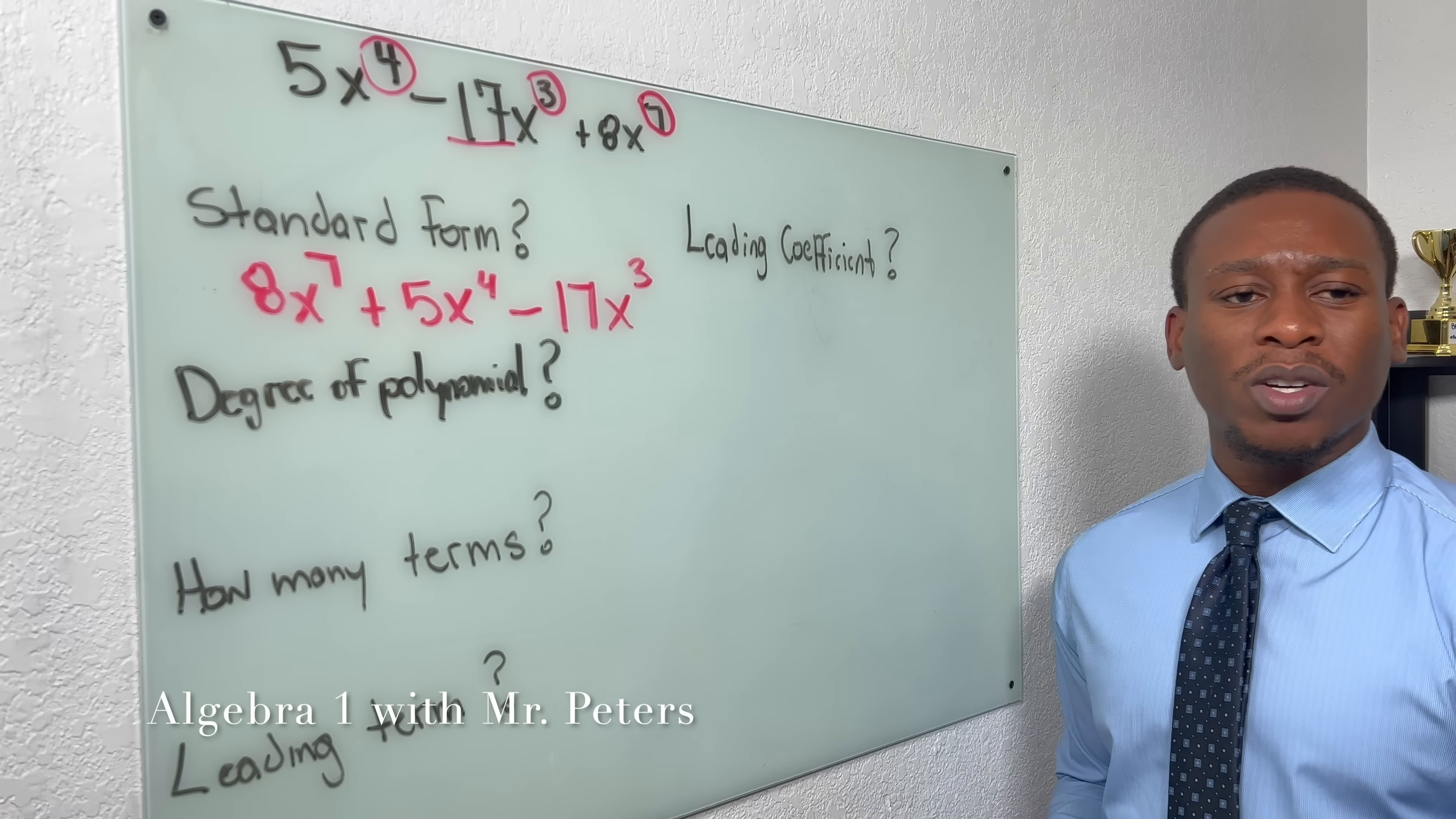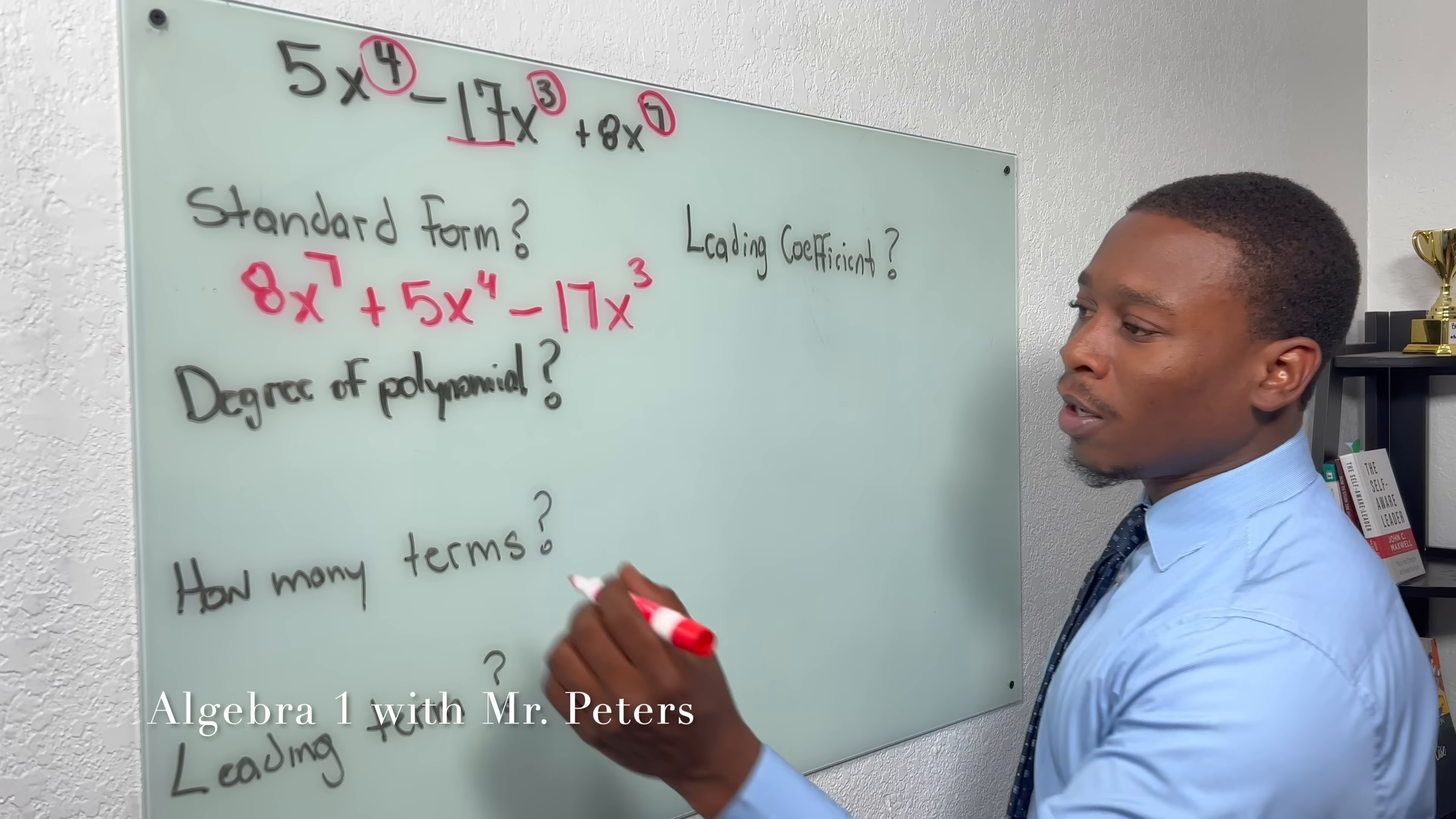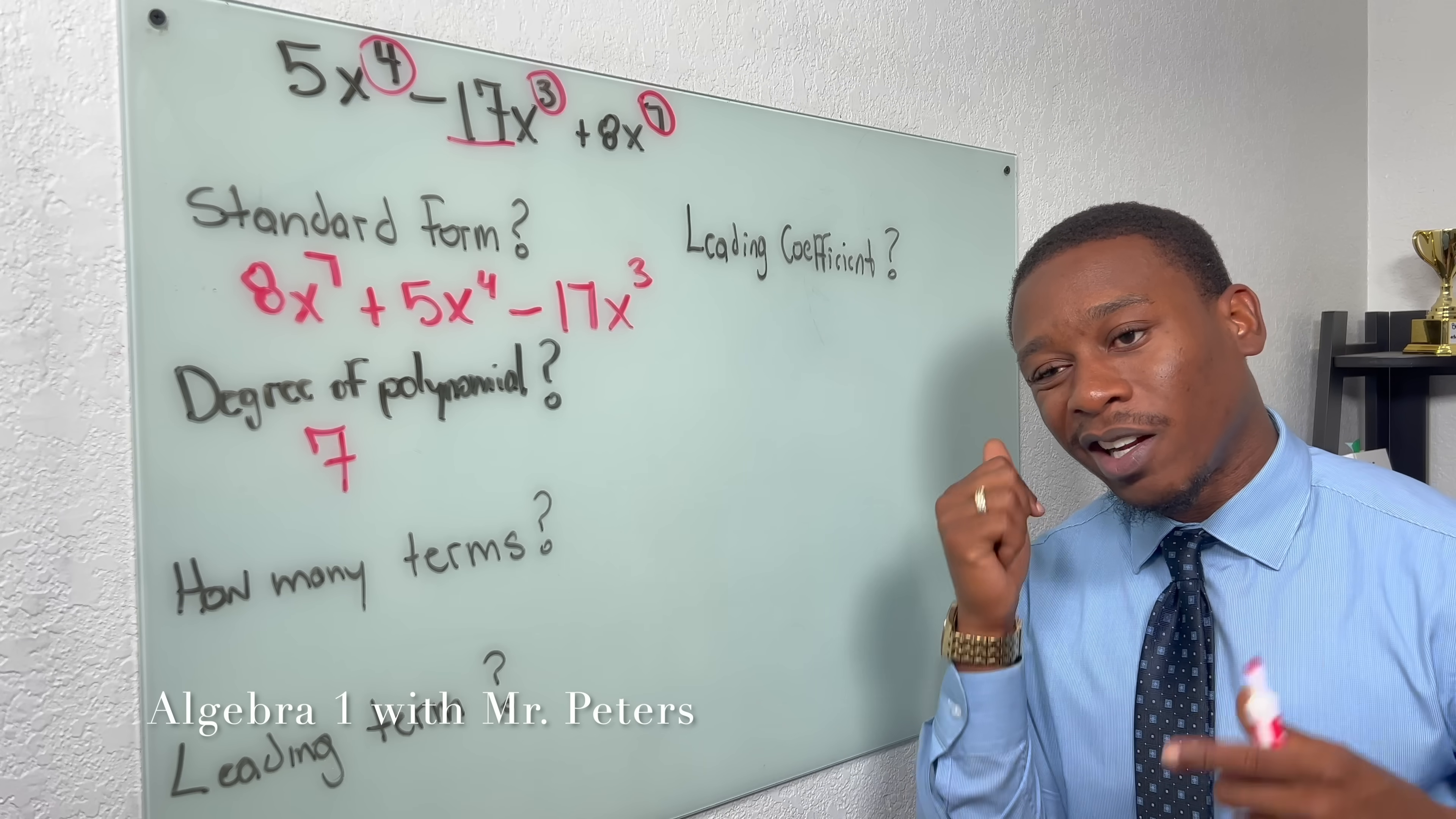Now, the degree of the polynomial, what they're asking us for is, hey, what is the highest exponent? And when we look here, we just have one variable, x to the 7th, so we know our degree is 7. Now, if there was another variable like y, we would have to add those exponents up, and then our degree would be 8. But I'll show you guys that in a different problem.